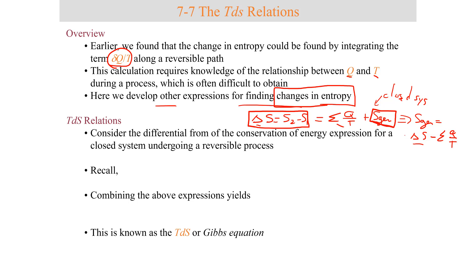What we often do to determine the amount of generated entropy is to first calculate the change in entropy of the system by looking at the property entropy — entropy at state 2 minus that at state 1. If I can calculate the entropy change and subtract the entropy transfer, I can find the amount generated and quantify the irreversibility. We will go through relationships called TDS relations, which allow us to compute the entropy of the system.